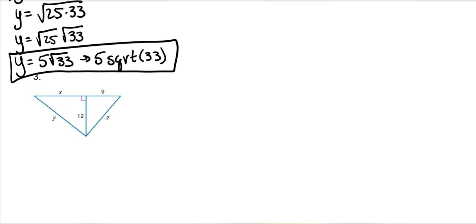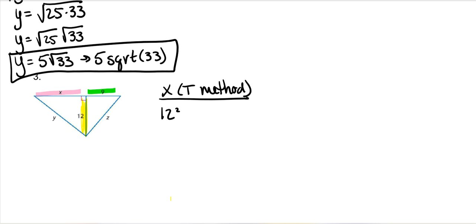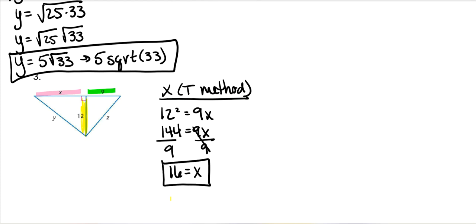Last example. The T method is the easiest, so we solve for X first using the T method. The altitude squared: 12 squared equals the two pieces of the hypotenuse, X and 9. So 144 equals 9X, which gives X equals 16. We'll need the whole hypotenuse, so that's 16 plus 9, which is 25.